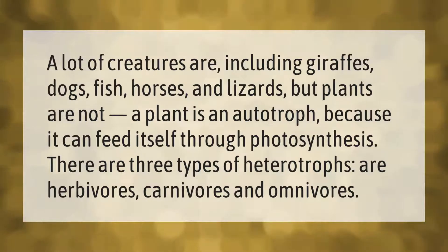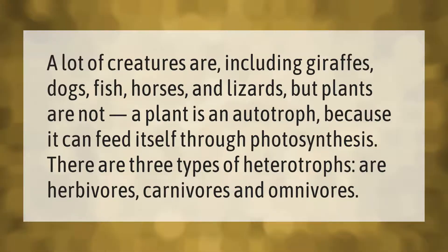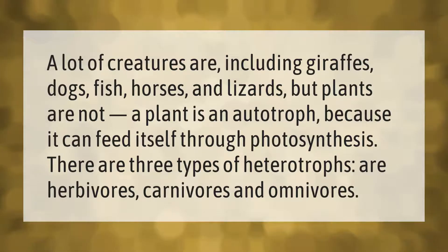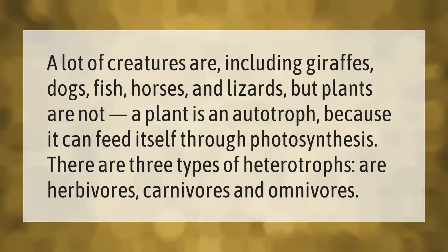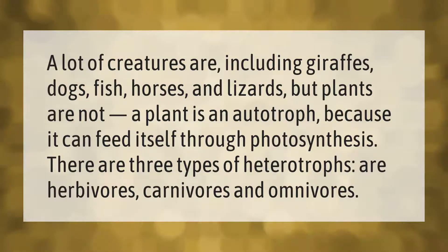A lot of creatures are heterotrophs, including giraffes, dogs, fish, horses, and lizards, but plants are not. A plant is an autotroph because it can feed itself through photosynthesis. There are three types of heterotrophs: herbivores, carnivores, and omnivores.